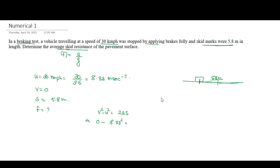The vehicle is decelerating — this is retardation — so the acceleration is negative. Therefore, acceleration equals negative f times g, where f is the skid resistance coefficient.